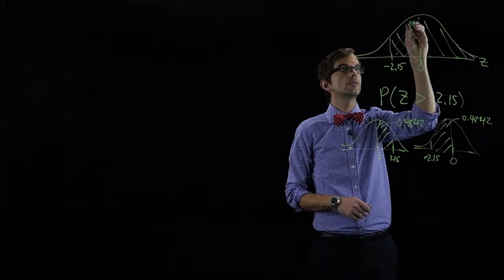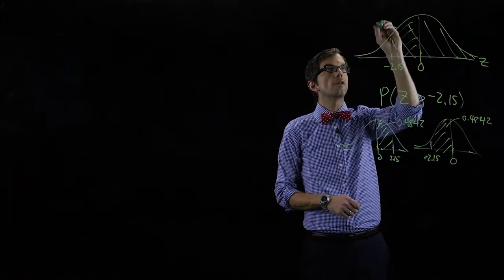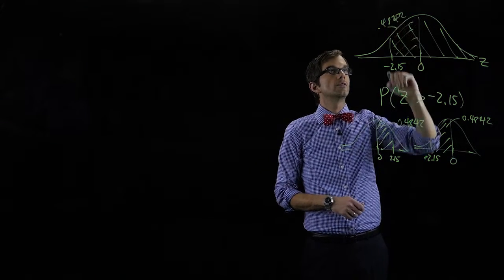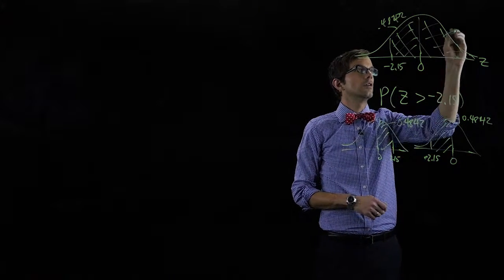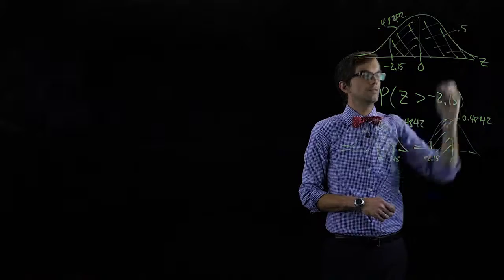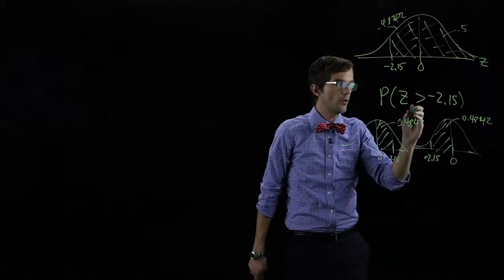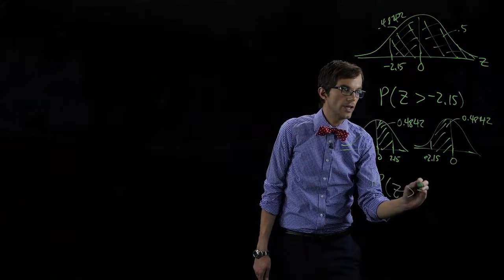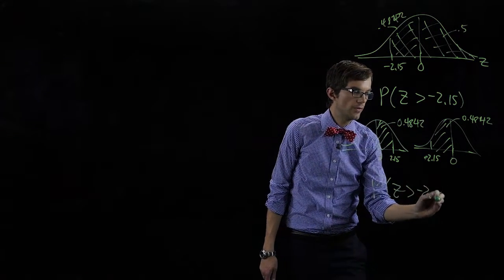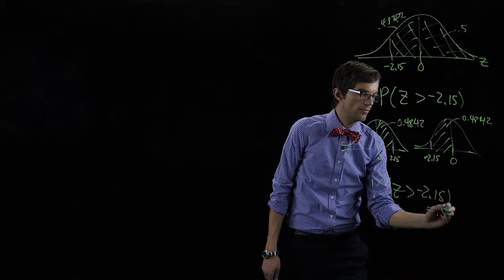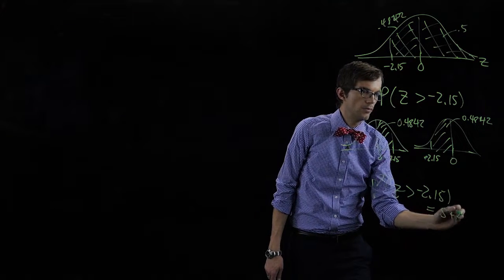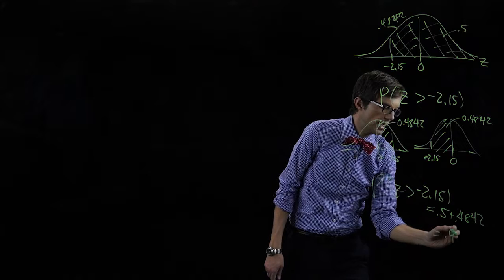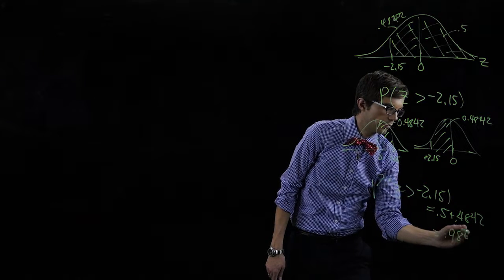So this area is point four eight four two, and this area is point five. The probability that z is greater than negative two point one five is point five plus point four eight four two, which is point nine eight four two.